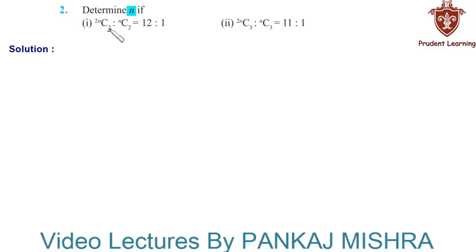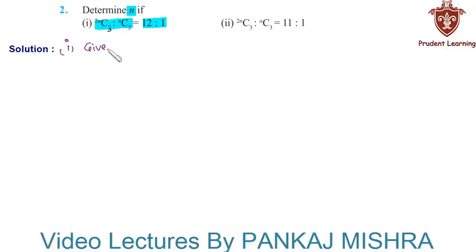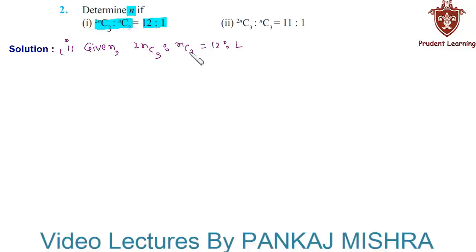Determine n if 2nC3 is to nC2 is equal to 12 is to 1. Let us see the solution for this problem. Here we are given that 2nC3 is to nC2 is equal to 12 is to 1.